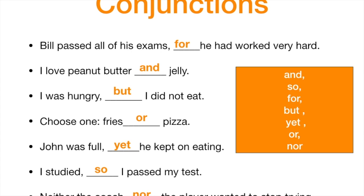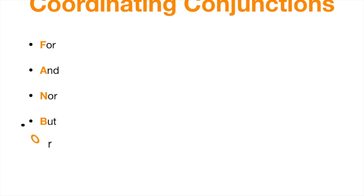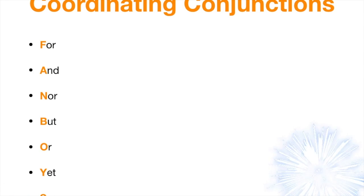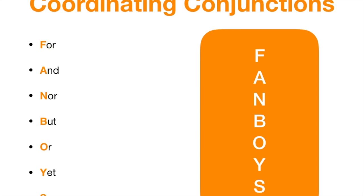So, look at your conjunctions again: for, and, but, or, yet, so, nor. Let's take a look at what they spell. For, and, nor, but, or, yet, so. If you look at the first letters, you'll see it spells FANBOYS — F-A-N-B-O-Y-S. FANBOYS. That's a great way to remember conjunctions that coordinate or join parts of sentences equally.